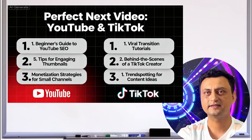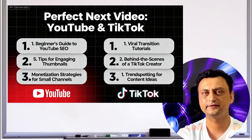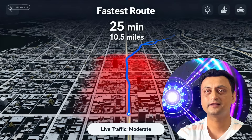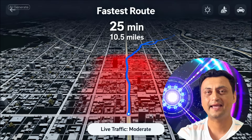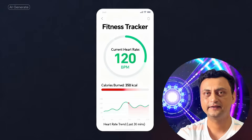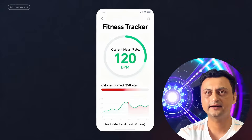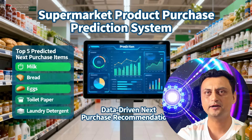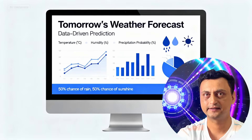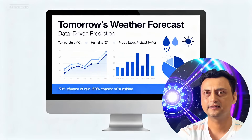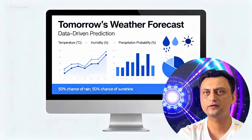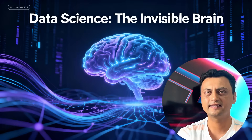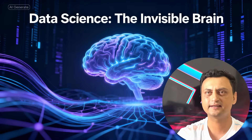YouTube and TikTok suggest the perfect next video. Google Maps shows the fastest route by analyzing live traffic. Fitness apps track heart rate and calories burned. Supermarkets predict what products people will buy next. Weather forecasting uses decades of data to predict tomorrow's rain or sunshine. Data science is basically the invisible brain behind so many things you already use daily.